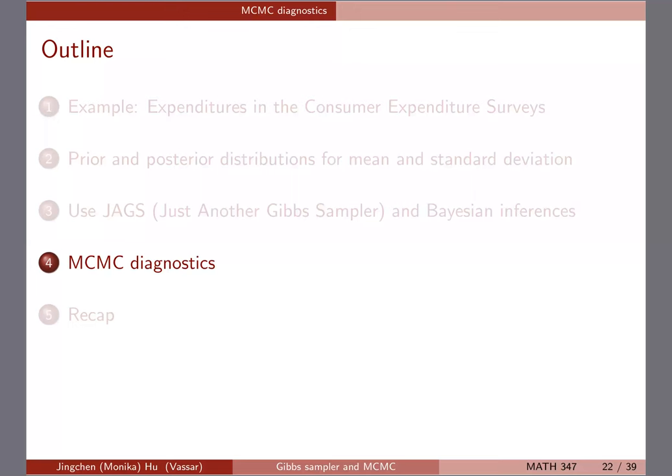Let me jump to the next topic. Suppose JAX can run for you and we get some output. An important aspect of doing Gibbs sampling or Markov chain Monte Carlo in general is that we have to make sure the MCMC does converge to the posterior. So far I've been talking about just running it long enough, but there exist diagnostics that can help you check if convergence is achieved. This is what I want to talk about: MCMC diagnostics.